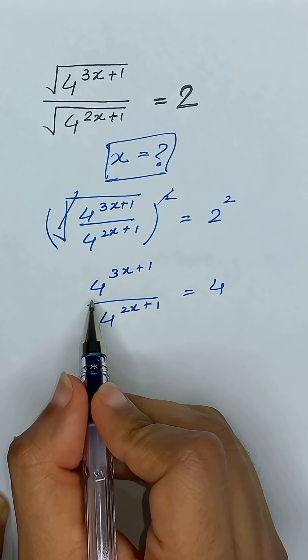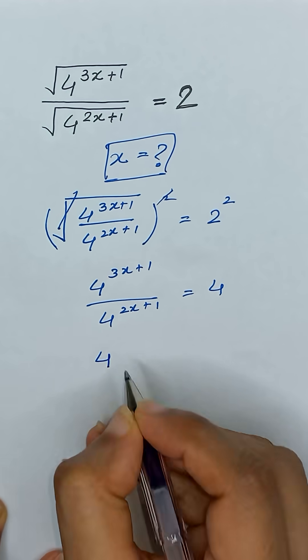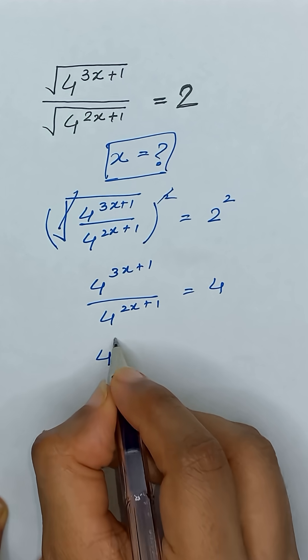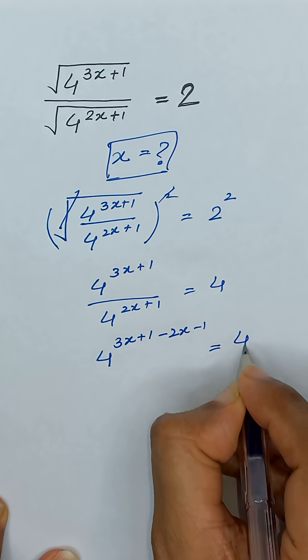Now it is in the form of a to the power m divided by a to the power n so we can write it as a to the power m minus n. It will become 3x plus 1 minus 2x minus 1 and it is equal to 4.